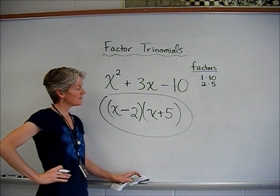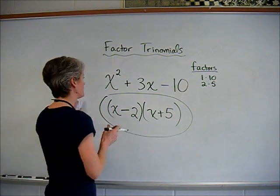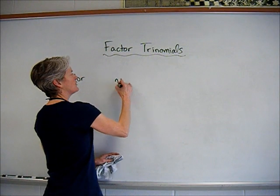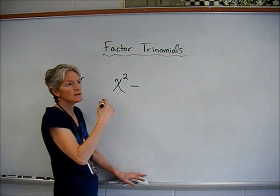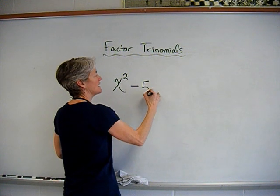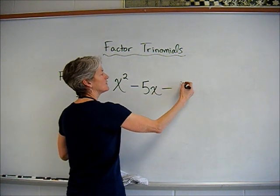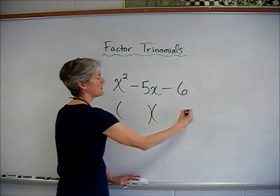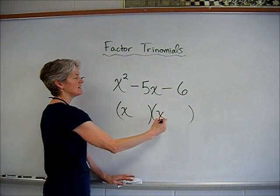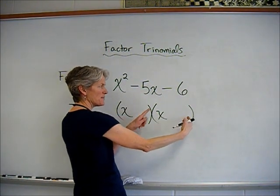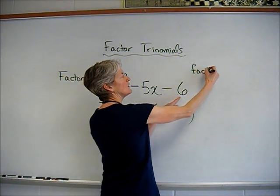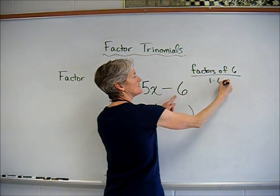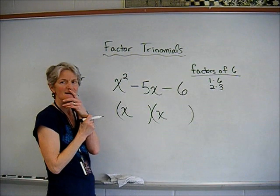Pretty cool. All right, I can't help myself. Let's do one more. One more. Let's do x squared minus 5x minus 6. Okey-doke. All right, here I go. I'm factoring and breaking it down. x times x is going to work. Now, something times something has to equal a negative 6. So let's think of the factors of 6. I've got 1 and 6. I've got 2 and 3.